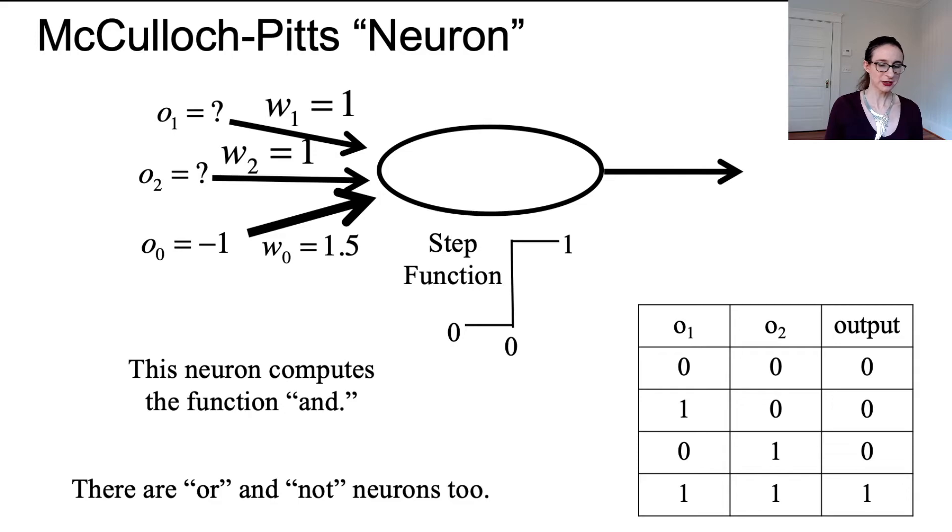Now there are OR neurons and there are also NOT neurons and in fact if you put a bunch of neurons together you can model all kinds of interesting logical statements. That's the cool thing about these neurons. They're very flexible.